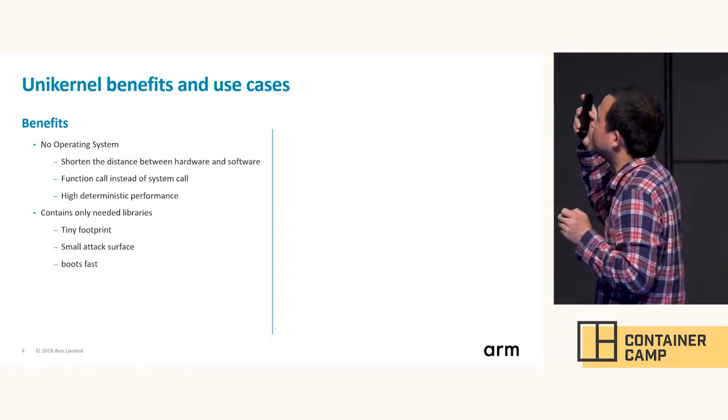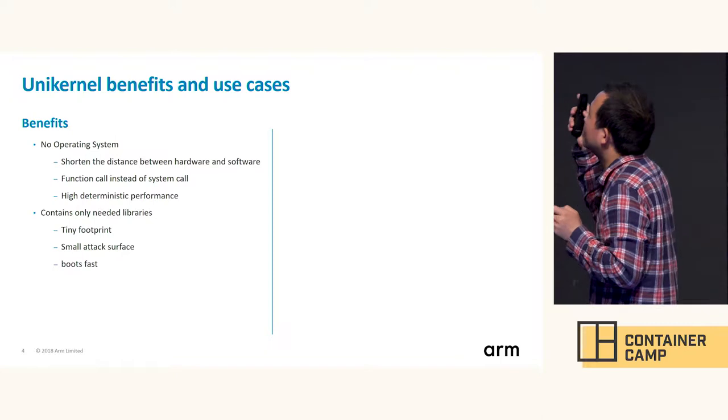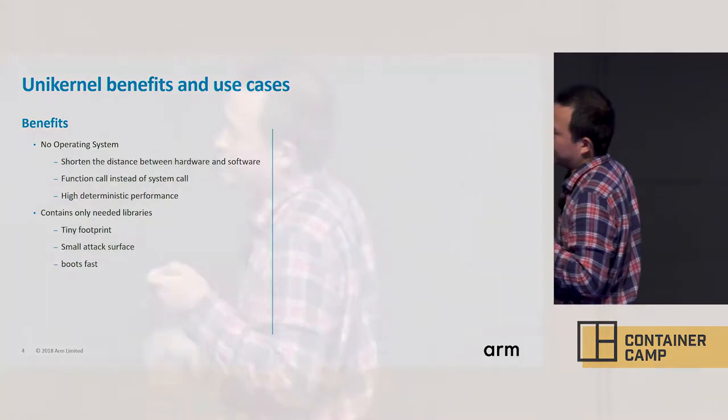UniKernels also contain only the needed libraries. This means they will have a very tiny footprint, sometimes in the tens to hundreds of kilobytes.